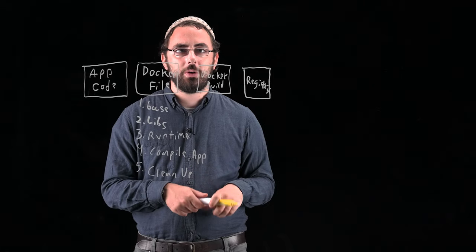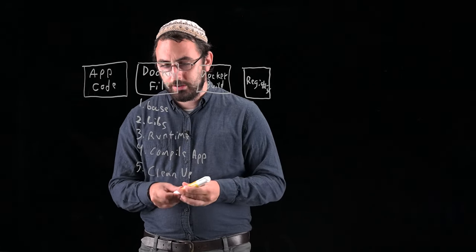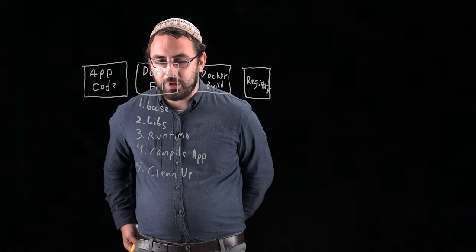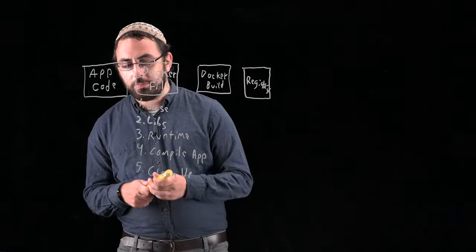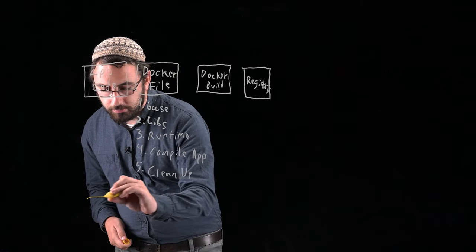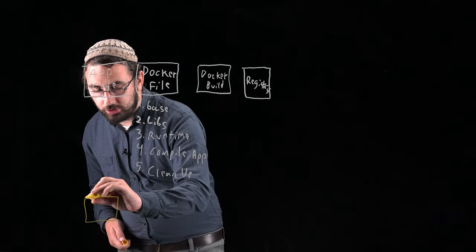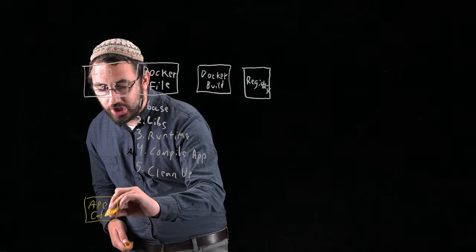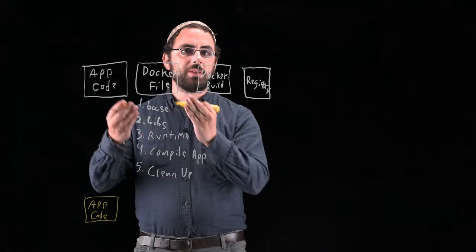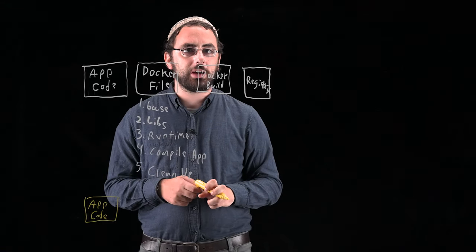Let's see how it does this. The first step that we have when we build one of these images is going to be the exact same as it was before. We're going to have our application code. Nothing changes here. We write the same code as we would if we were using a Docker file.